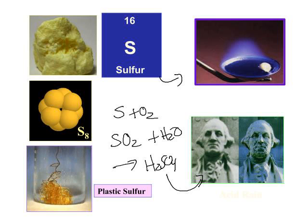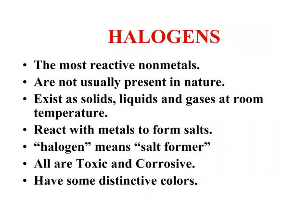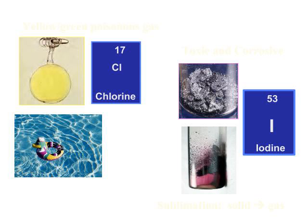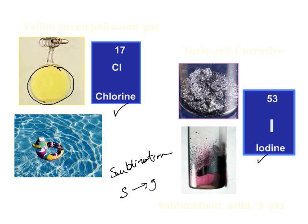We also looked at some unique properties of sulfur as plastic sulfur. The halogens are the most reactive nonmetals. They are not present in nature. They exist as solids, liquids, and gases at room temperature. They are all toxic and corrosive and have some distinctive colors. The ones that you're responsible for are primarily chlorine and iodine. Iodine was demonstrated in class as it goes through the process of sublimation — going straight from a solid to a gas. Chlorine is a yellow gas used for disinfectants, bleach, and to disinfect swimming pools.